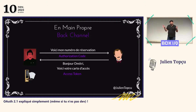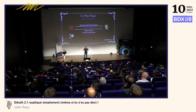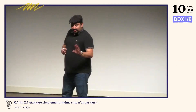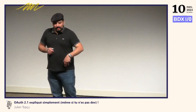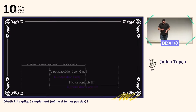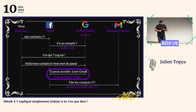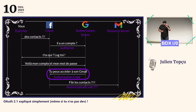On va s'intéresser à comment ça se passe en vrai. C'est au moment où Google vous redirige vers Facebook. Dans cette redirection, il va mettre l'authorization code. Mais le seul moyen d'échanger de l'information sur une redirection, c'est via les URL.